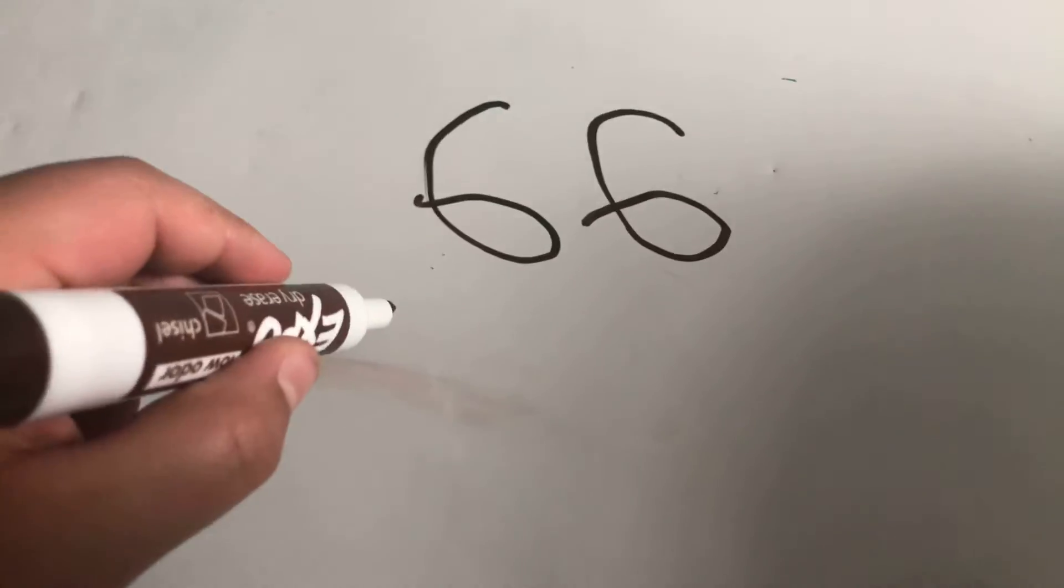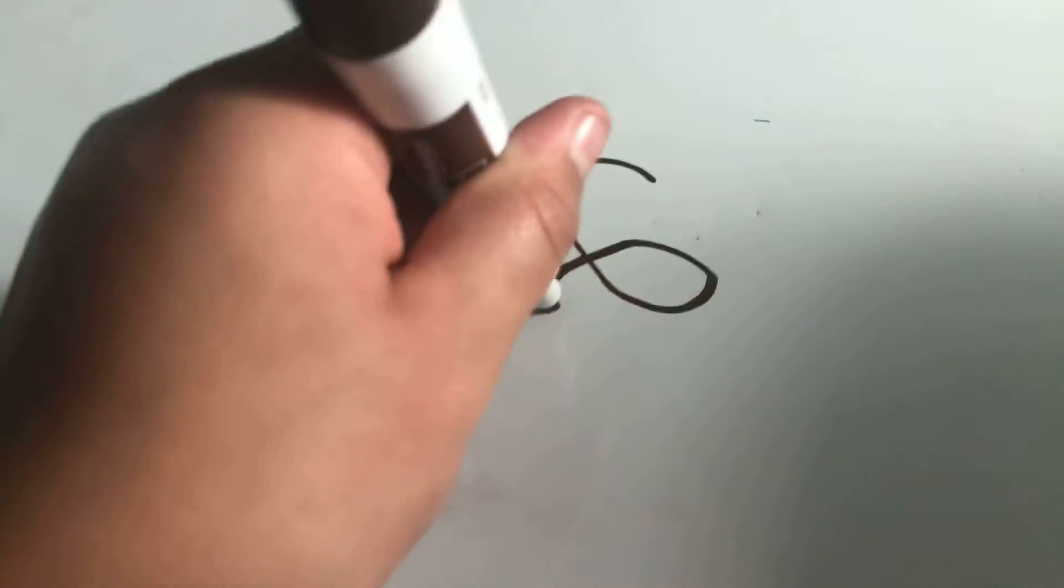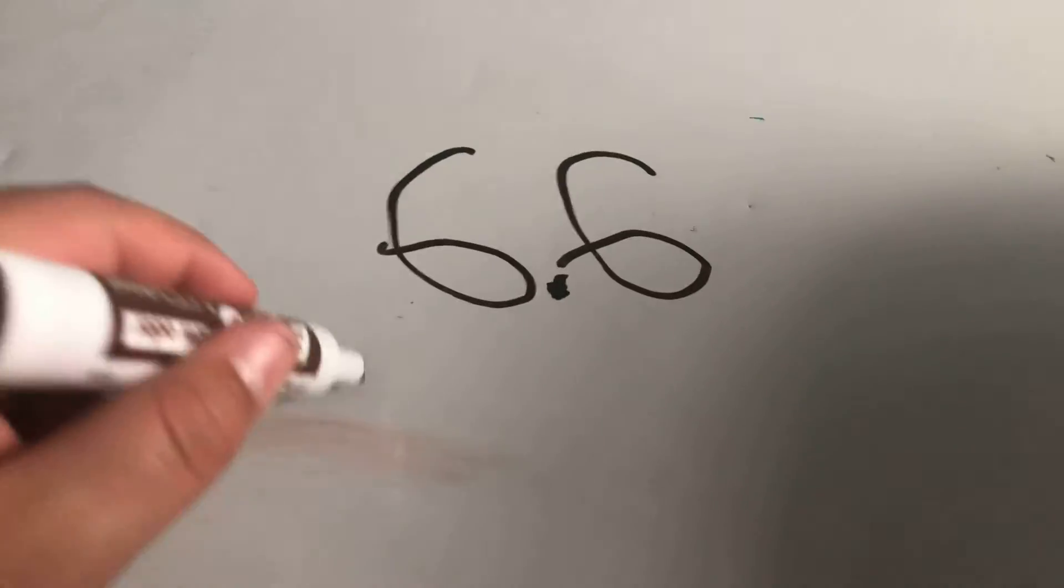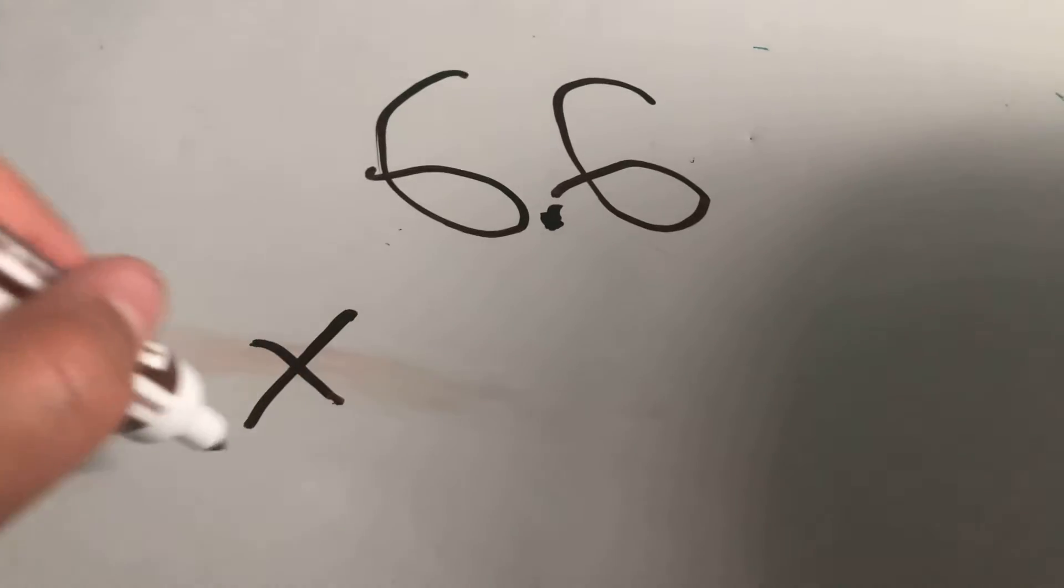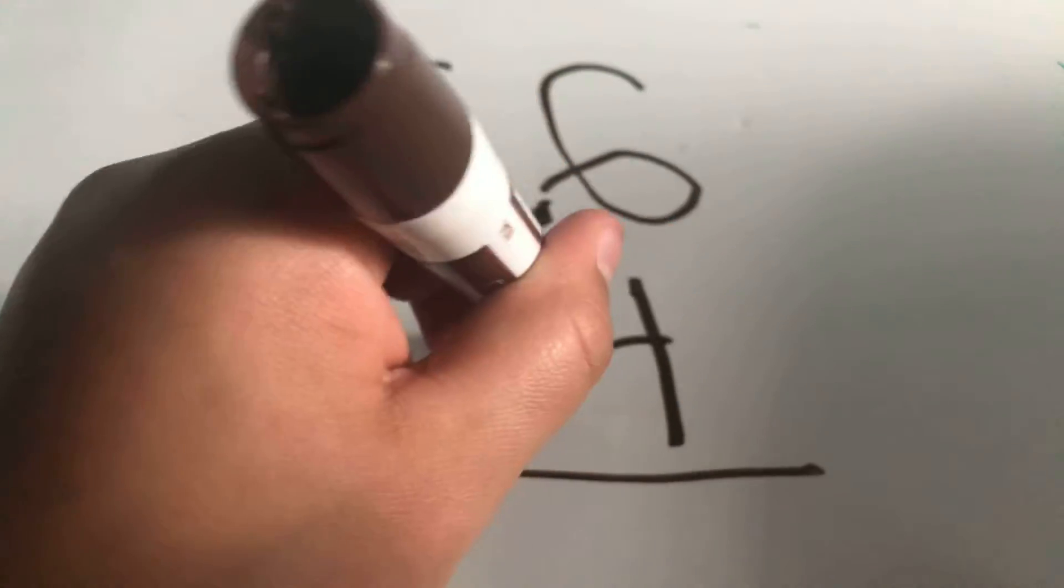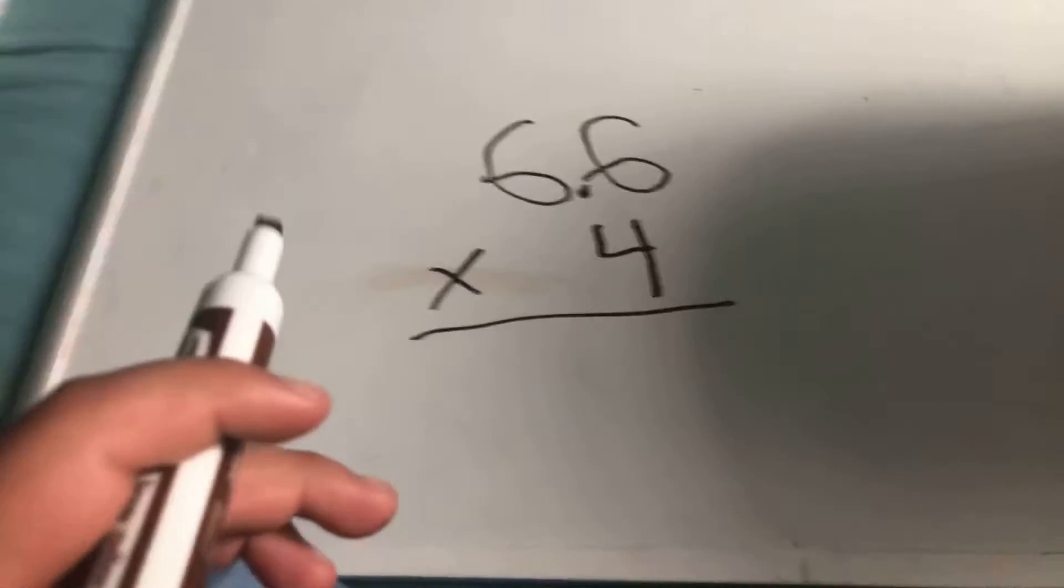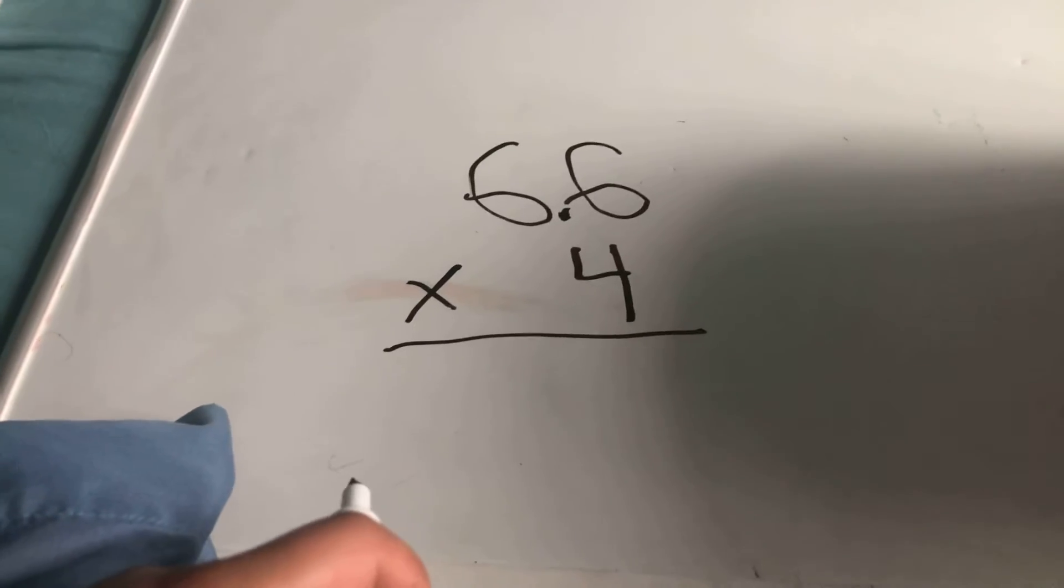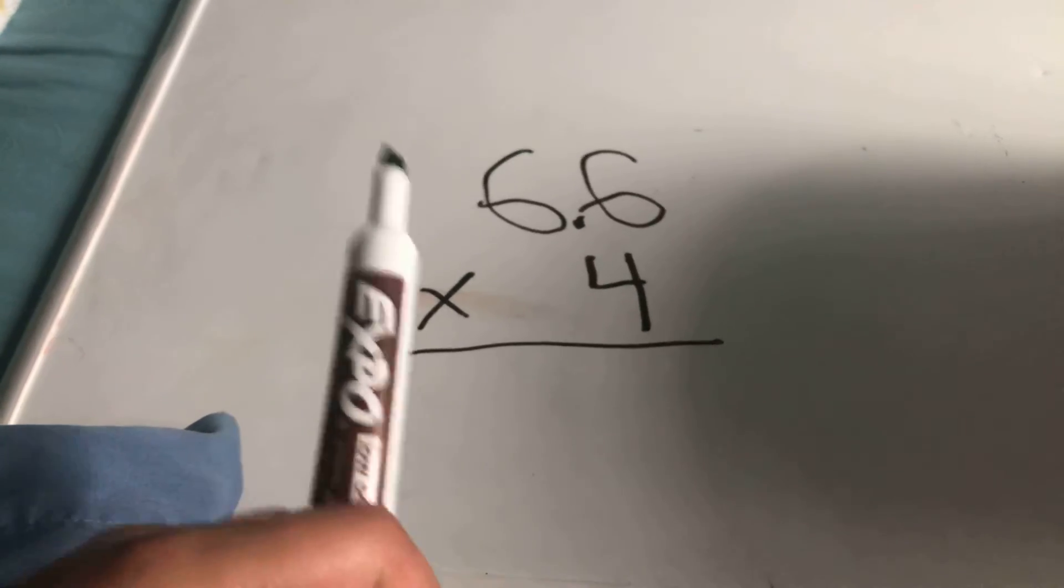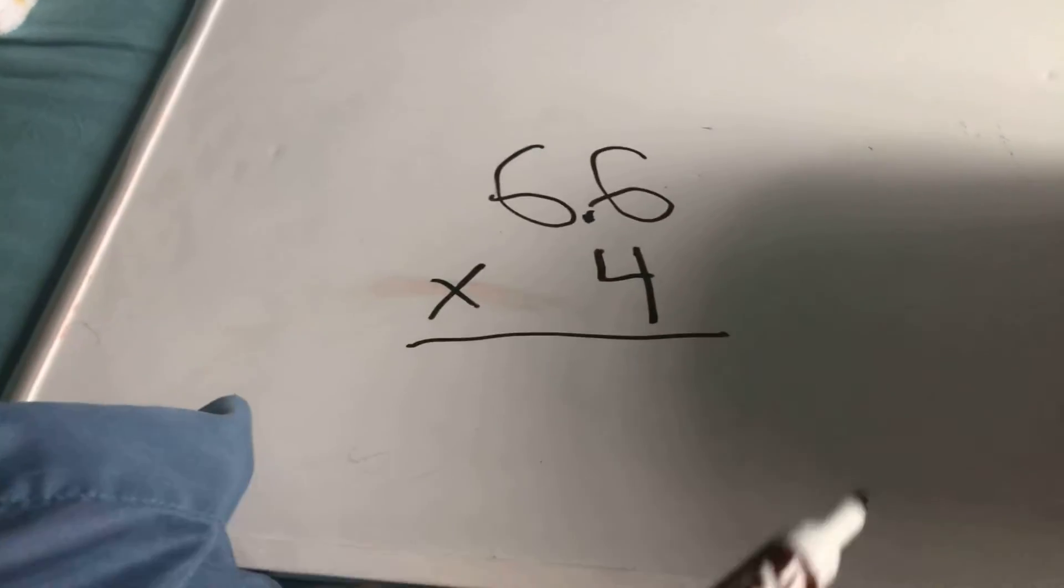Multiplication of two-digit by one-digit number. We put the point right here, times. This is what we do - decimals of multiplication, two-digit by one digit.